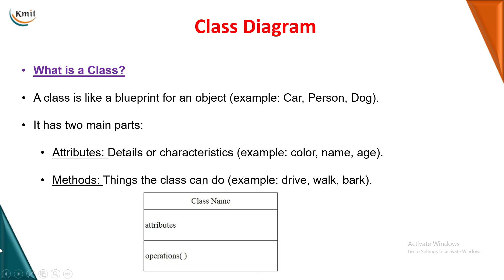A class looks like a rectangular box divided into three rows. The topmost row is the class name, the second row is the attributes, and the third row is the operations. For example, take a car class: the class name is 'Car', the attributes are color, name, age, cost, and brand, and the operations are what we can do with a car - we can drive, accelerate, and apply brakes.